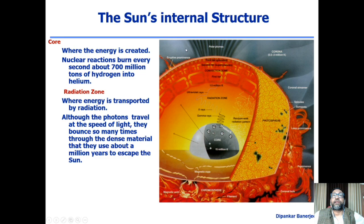This is called a random walk — like a drunkard person moving around, colliding with another person and bouncing back. That sort of process describes the radiative zone, which is about 30% inside the sun.